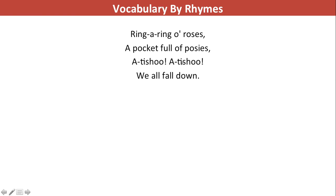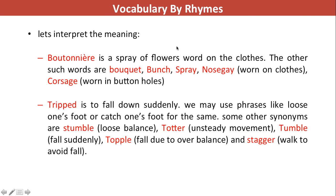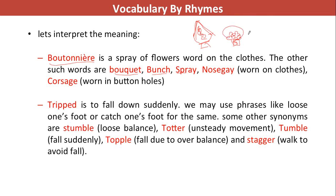Here's the entire rhyme: 'Ring-a-ring-a-rosy, a pocket full of posies, achoo, achoo, we all fall down.' Let's learn synonyms. A buttonhole is a spray of flowers usually worn on clothes — a small flower worn in the coat. A bouquet is what you give to people, usually triangular in shape with many flowers inside. A bunch is a basket of flowers arranged together. A spray is a big stick-like thing covered with flowers. Nosegay is also worn on clothes — buttonhole is worn where the cuff is tied, while nosegay is worn on the coat.